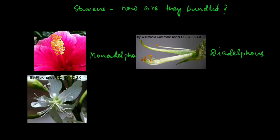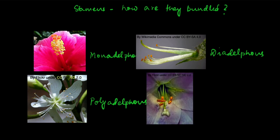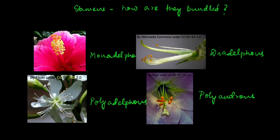When there are even more bundles, like in this flower — you see there is one bundle here, one here, one here, one here — we call them polyadelphous stamens. Not in all flowers are stamens bundled together. For example, in this flower, all of the stamens are free from each other, and the term for that is polyandrous. Poly means many, androus stands for stamens, so polyandrous means all the stamens are free from each other and are not bundled together.